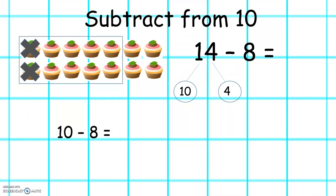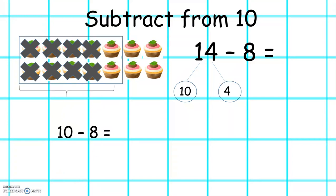1, 2, 3, 4, 5, 6, 7, 8. We have 2 left in the box. So 10 take away 8 equals 2. And here we have 4. 2 plus 4 equals 6. So 14 take away 8 equals 6.